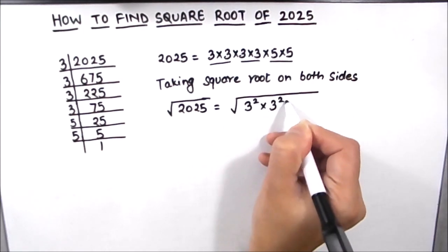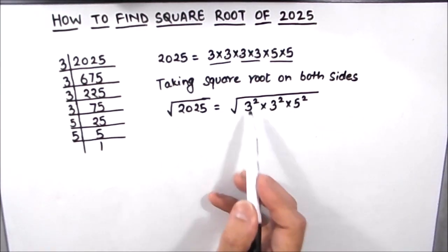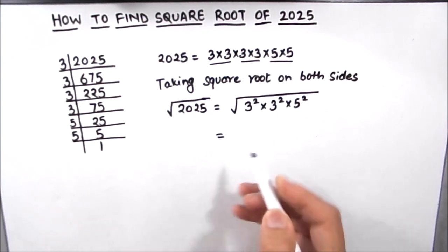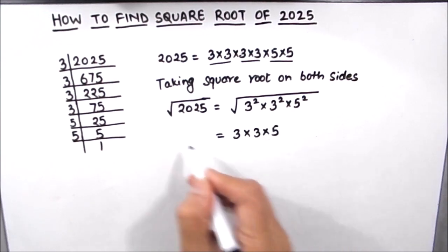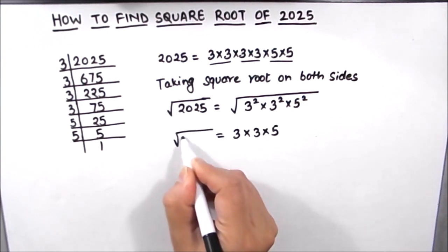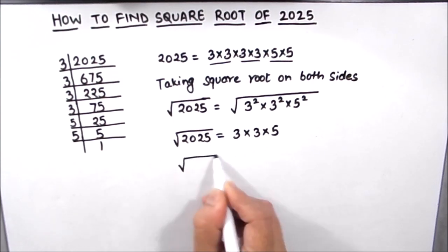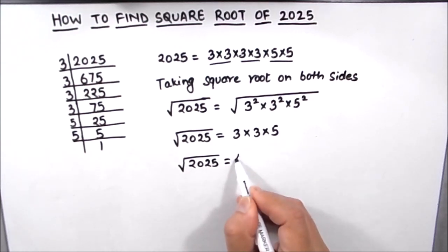As we are taking the square root, all the squares get cancelled, so we are left with 3 times 3 times 5. So the square root of 2025 is 3 times 3 is 9, and 9 times 5 is 45.